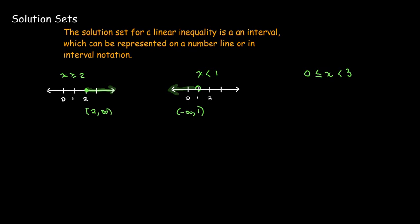In the last case, we have a bounded interval, meaning there's a lower bound and an upper bound. x is between 0 and 3 — we include 0, but not 3, since there's no 'equals to' part there. On the number line, we have a closed circle at 0, an open circle at 3, and every number in between is shaded. In interval notation, we use a square bracket with 0 on the left and a parenthesis with 3 on the right.